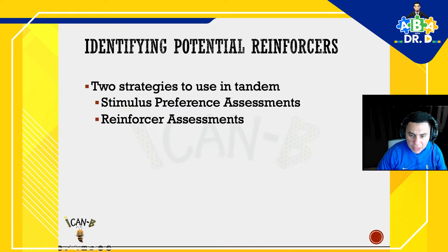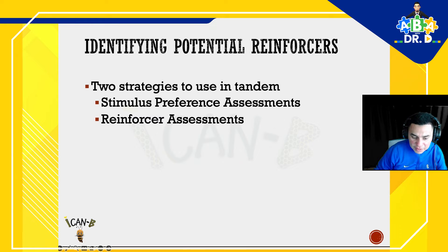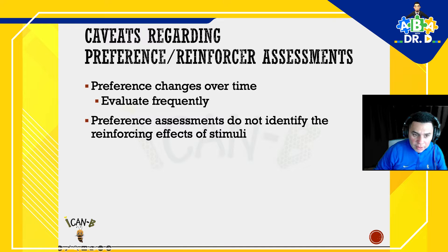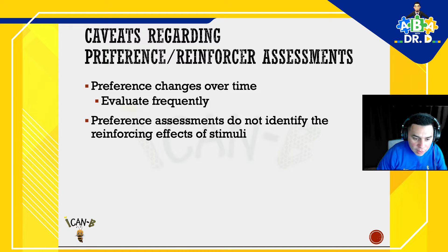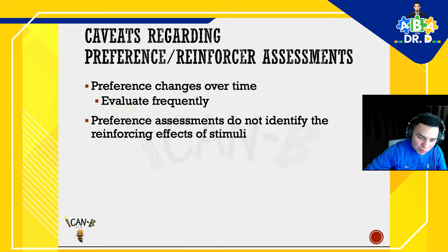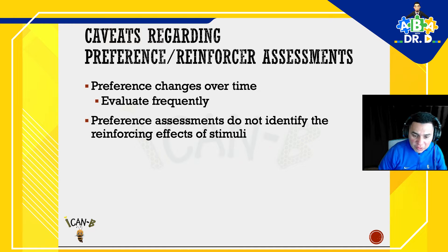There are two strategies to use in tandem when identifying reinforcers: a stimulus preference assessment or a reinforcer assessment. We're going to focus on the stimulus preference assessment side. One important caveat is that preference obviously changes over time, so you always need to be looking for what reinforcers the student is interested in at that moment. A big mistake I see is people using the same reinforcer over and over again — that can cause it to lose value. Also note that preference assessments do not identify the reinforcing effect of stimuli.